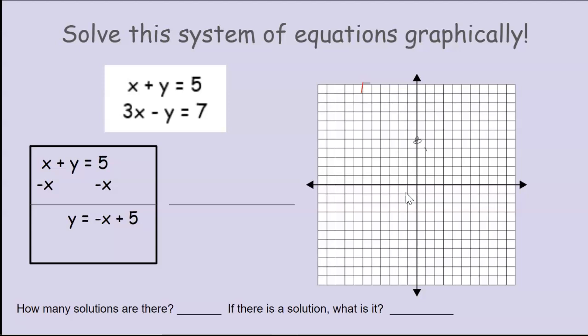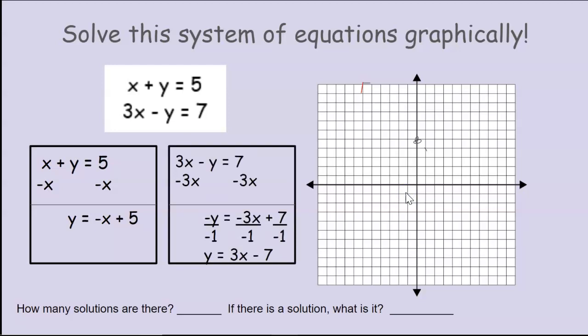3x minus y equals 7. Yes, I'm going to pause the video again. Please practice doing your rewrites. It's super important for next year in the high school. If you did it correctly, you subtracted 3x's from both sides. Then you noticed you were left with a negative y, and you divided every term there by negative 1 to end up with y equals 3x minus 7, starting at the negative 7 on the y-intercept, going up 3 to the right one.